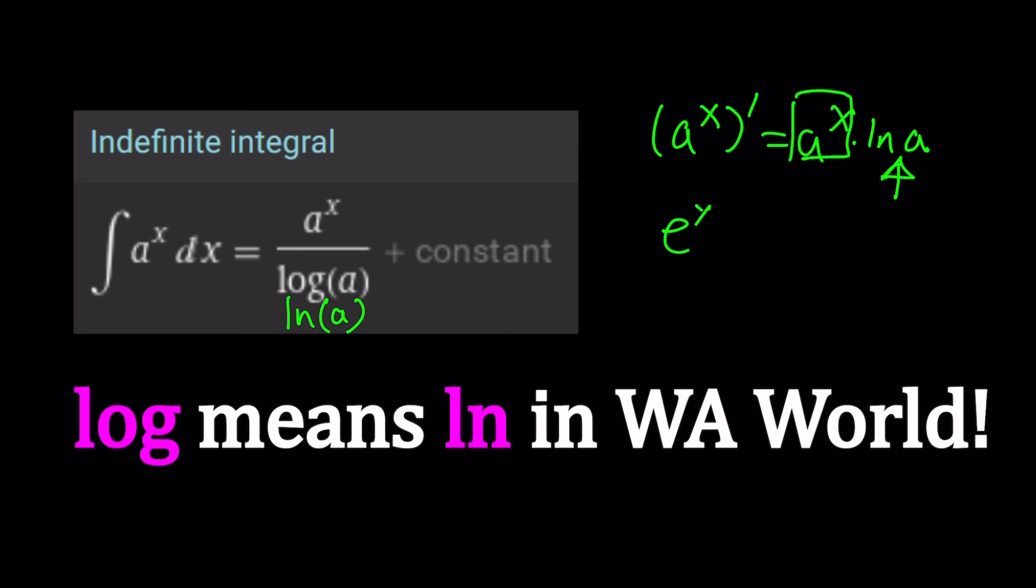But before that, let's also talk about the derivative of e to the power x. That will be e to the x times ln e, but ln e is 1, so we don't write it. In other words, e to the power x is a very special function whose derivative and integral equals itself. Of course, with the integration, it's a little tricky because you have to include the constant of integration, which is usually written as c. And what happens when you differentiate c? You get 0 because it's the rate of change of a constant, which is not a variable, which doesn't vary.